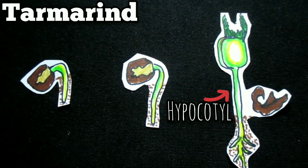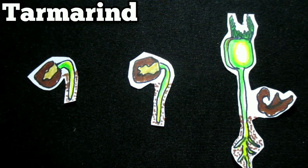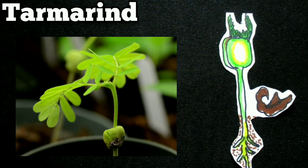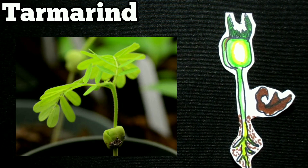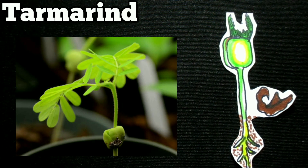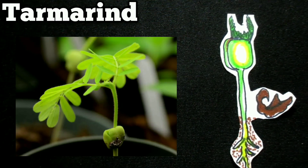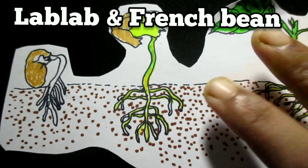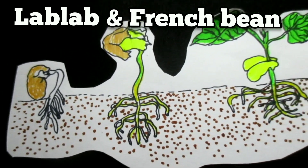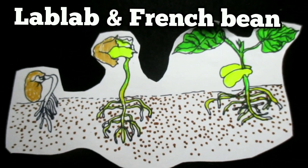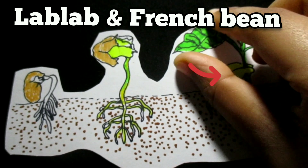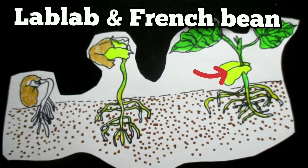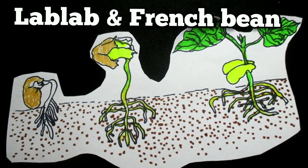The cotyledons turn greenish, gradually shrivel up, and finally drop off as the food matter within them is used up. The cotyledons, although turning greenish, do not look like ordinary leaves as they do in Cucurbita. In the case of Lablab and French bean, both germinate like tamarind. The fleshy cotyledons do not become leafy but behave like tamarind cotyledons. Lablab is the common flat bean of the plains.